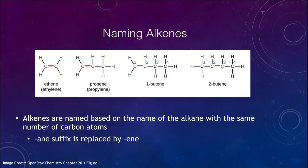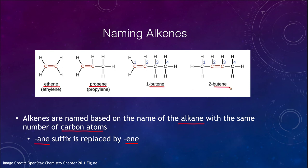To name alkenes, we start with the alkane name for the same number of carbon atoms and replace the '-ane' suffix with '-ene'. So ethane with a double bond becomes ethene, propane becomes propene, and butane becomes butene. We also need to number the carbon atoms to indicate where the double bond is — so 1-butene has the double bond at carbon one, and 2-butene has it at carbon two, always starting with the lowest-numbered carbon attached to the double bond.